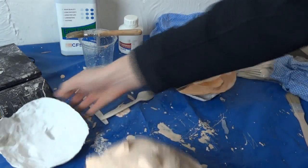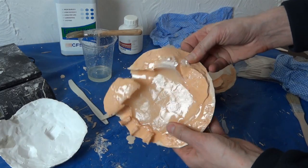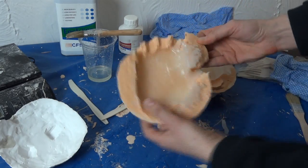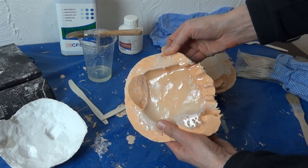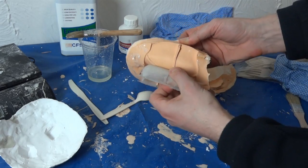So we just need to demold the other one. We'll just take off the mother mold and peel this away all the way around. There we go.